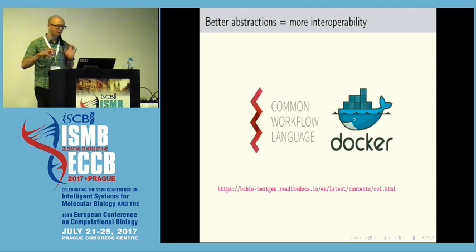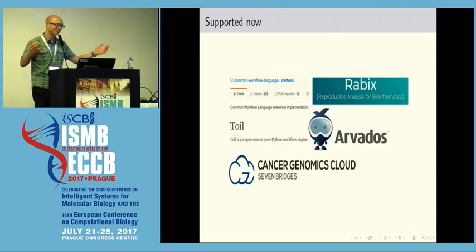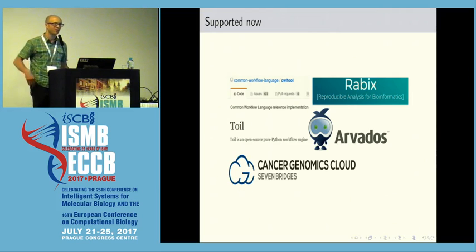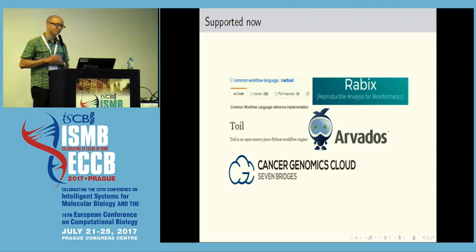BCBio has a CWL implementation of its workflow. What we've been doing for the past year is actually making it work in practice in a lot of places. This slide shows a bunch of logos, but what it actually represents is a ton of work to get BCBio running in multiple places. If you've ever tried to do this with a complex workflow — running alignment, variant calling, QC, and all these tools together — it's a ton of work. BCBio now lets you take the CWL and run it in all these places and actually move it between different analysis platforms.